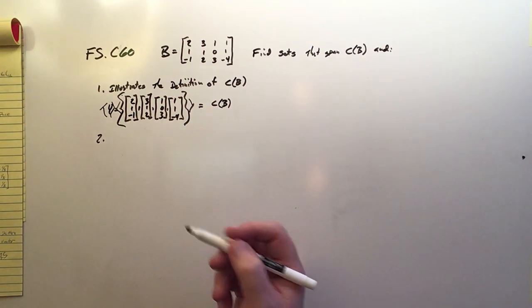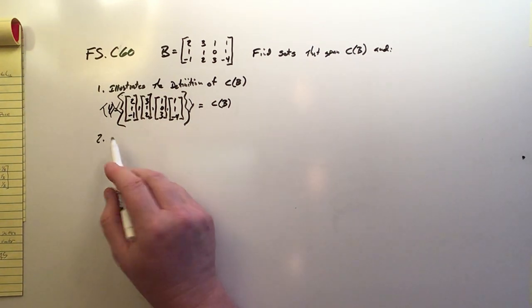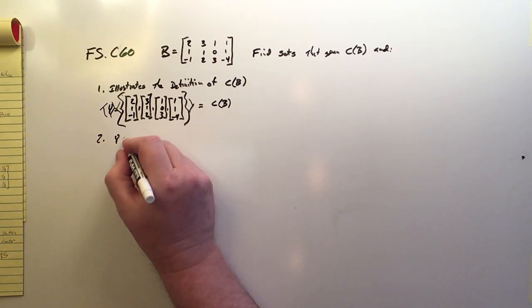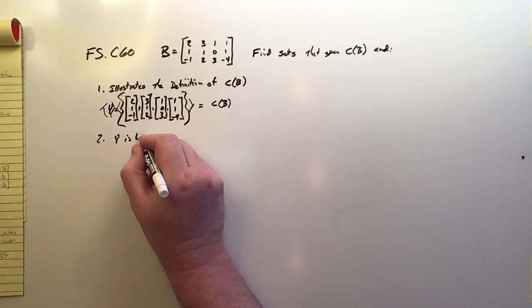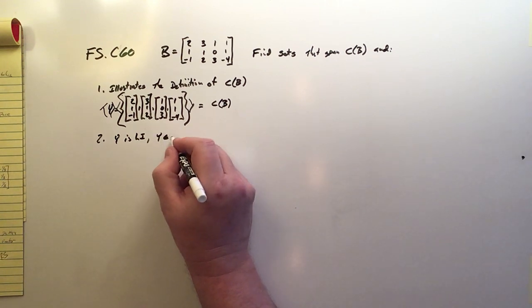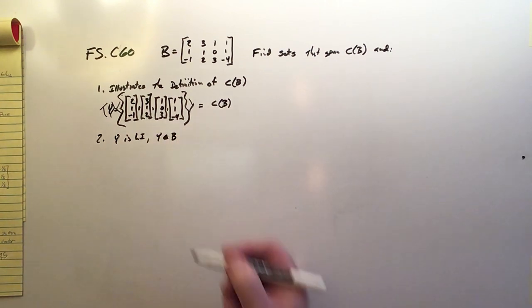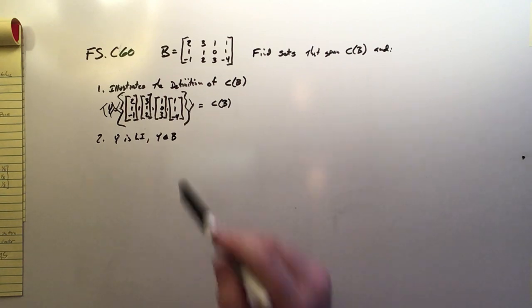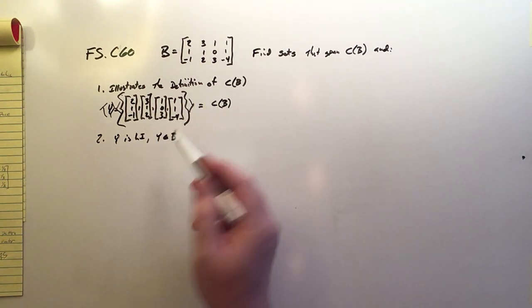Perfect. Okay, the second criteria we want to meet is that we want the vector set Y is linearly independent, and I also want Y to be a subset of B, which means I do want to choose vectors that are within this set, but I want to do so in a way that makes a linearly independent set. And the easiest way to do that is to do the reduced row echelon form of the extended vectors. So that's what I'm going to do, or the extended matrix.